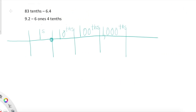Here's where things get a little more interesting. We have 83 tenths and then we're taking away 6.4. These two numbers are in different languages — this is in unit form, this is in standard form. It's difficult to compare numbers when they're in two different languages, so let's rewrite the expression so both numbers are in the same language. 83 tenths in standard form is 8.3, so we have 8.3 minus 6.4.